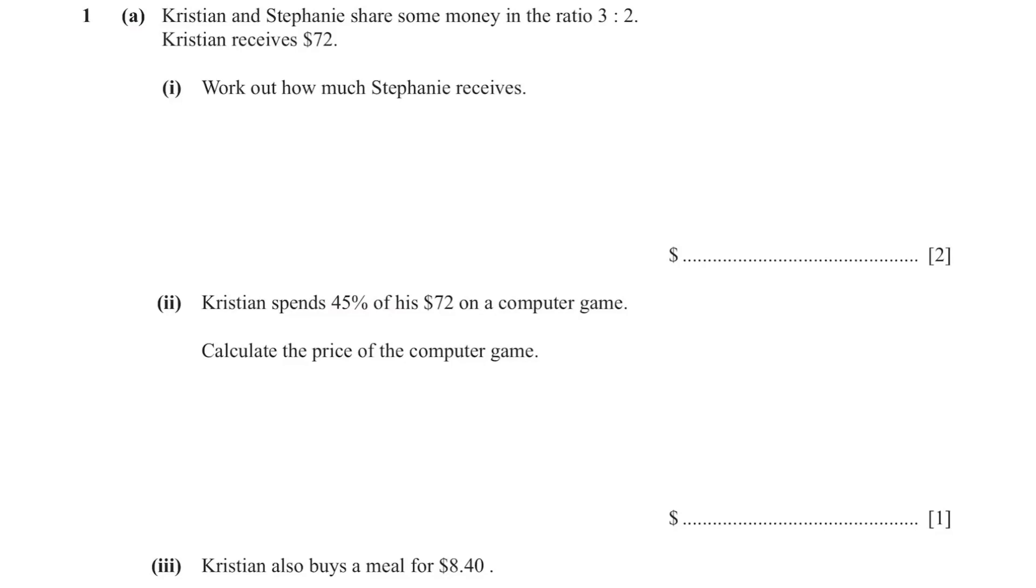If you write this in mathematical terms, it's 3 is to 2 equals 72 is to X. X represents how much Stephanie receives. So to find X, divide 72 with 3 and multiply it by 2. We get $48.